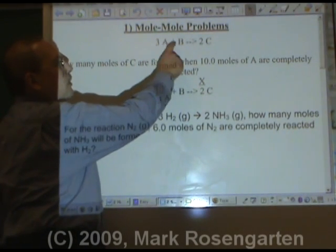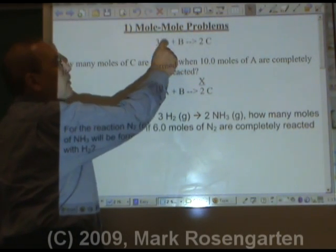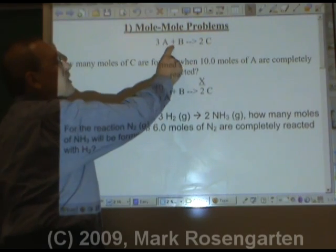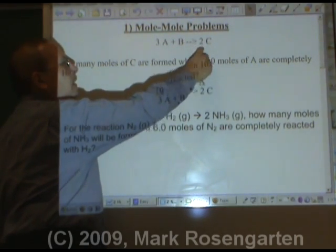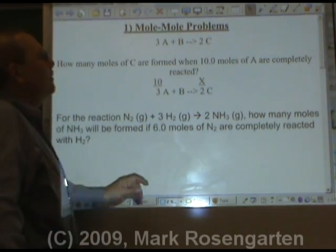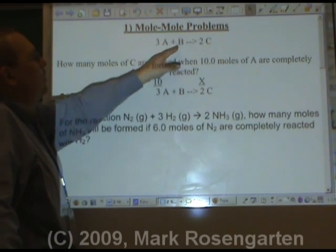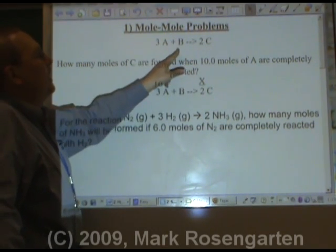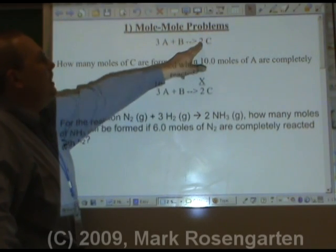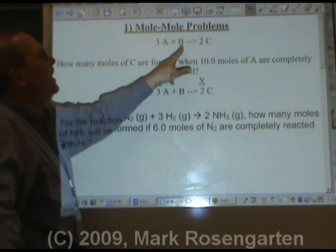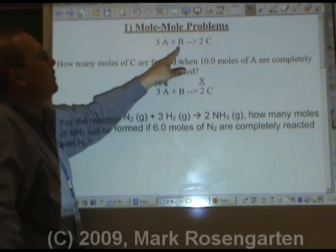The coefficient in the balanced equation gives you the ratio of reactants you need to make the number of moles of product that the balanced reaction has. For example, we need a three to one ratio of A to B to make two moles of C. If I wanted to make four moles of C, I'd need twice as much, six of that and two of that.